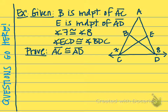Let's start off by looking at our givens. We're going to label our givens on our picture to see what triangles we might want to pick out. B is the midpoint of segment AC; therefore, BC and BA are going to be congruent. E is the midpoint of AD; therefore, AE and ED are going to be congruent. Angle 7 is congruent to angle 8.